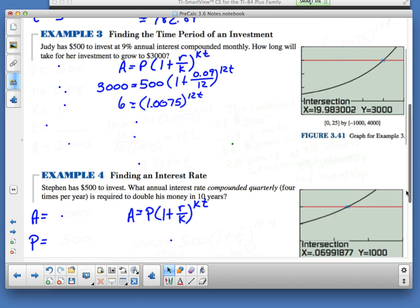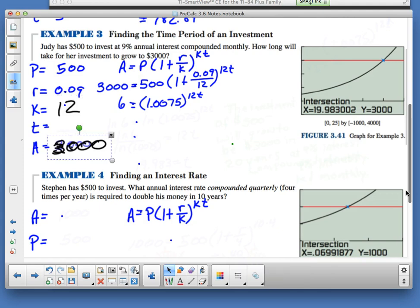There's two ways I can look at this problem. My A was $3,000, my board isn't working real fast. My A is $3,000, my K is 12. I'm looking for T. Now that I've got that information, I have two choices. I can take the natural log of both sides, or I could graph 6 in Y2 and 1.0075 raised to the 12X power in Y1. But I should be able to do both.